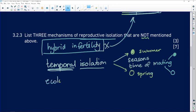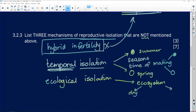We can also talk about something called ecological isolation. Ecological isolation refers to the kind of ecosystem that we find them in. If one species is used to, for example, living in a very dry ecosystem, and the other species is used to living in a very wet ecosystem.